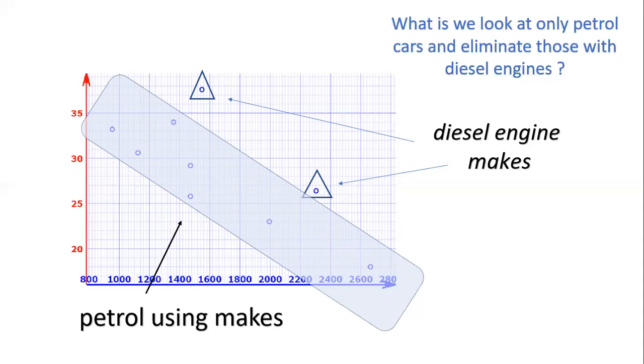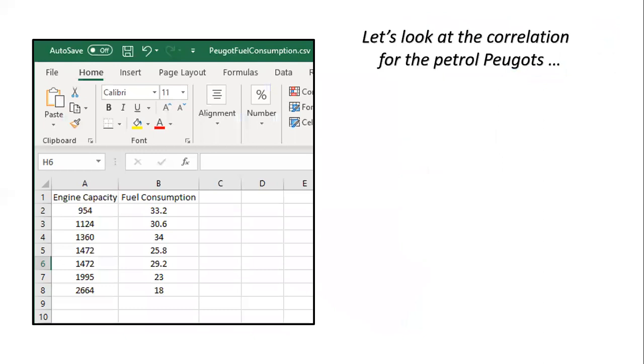And we're going to do that here by using StatKey, which is the technology that comes with our textbook and is heavily associated with it. In order to look at that correlation for the petrol Peugeots, I began here by creating an Excel file. Now you can see here it's called Peugeot fuel consumption, and it's a comma delimited file, a .csv file. I've got two columns there, column A for engine capacity and column B for fuel consumption. And I've labeled those at the top there and entered the data for the seven non-diesel cars.